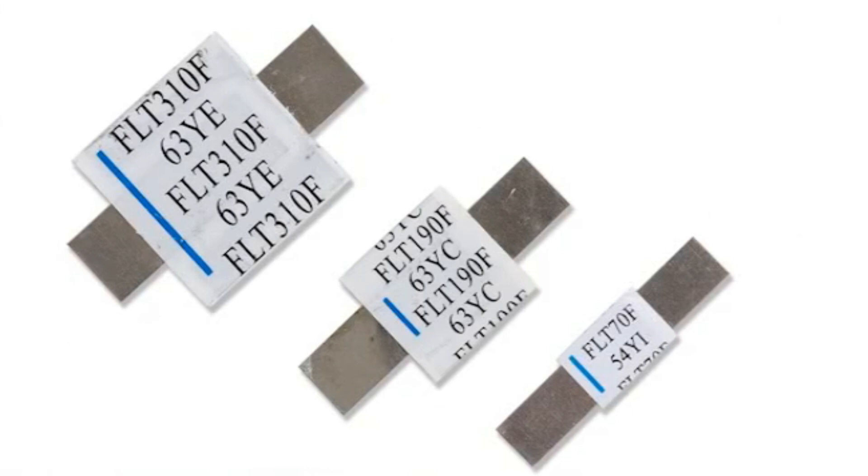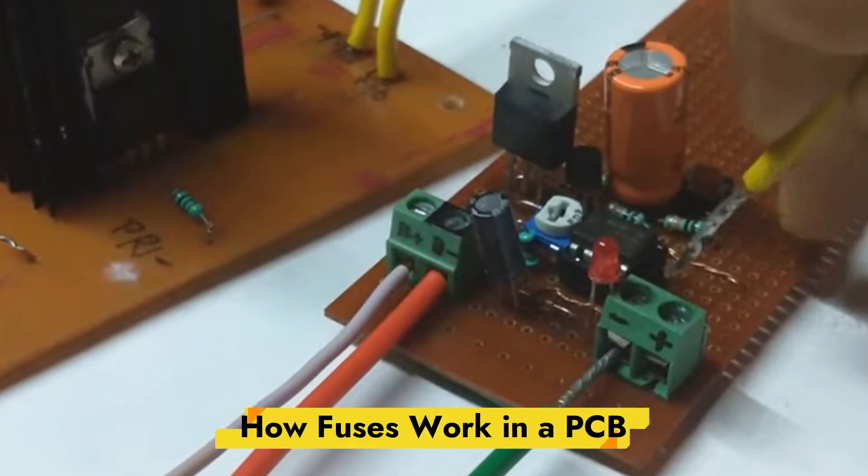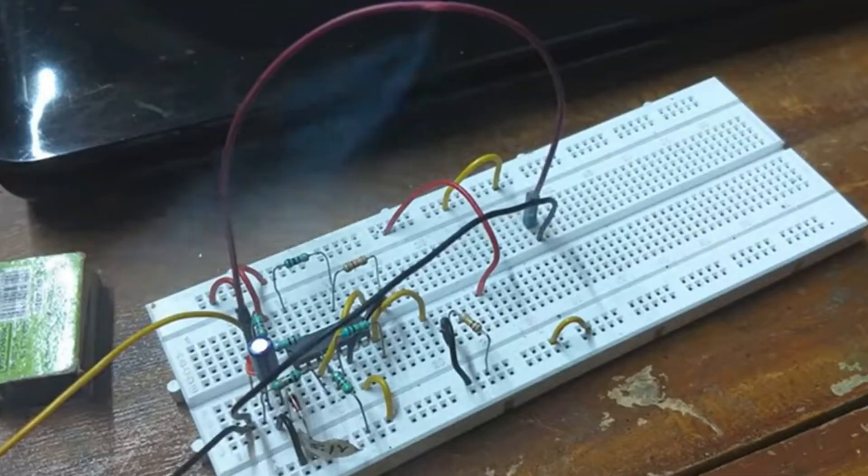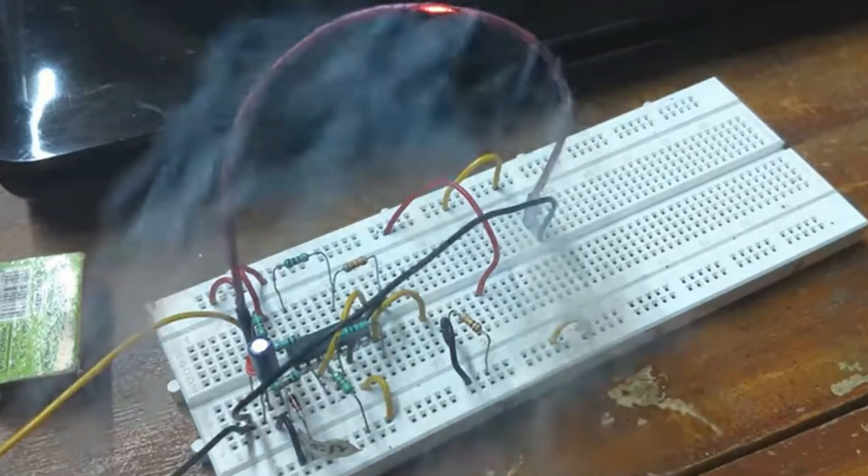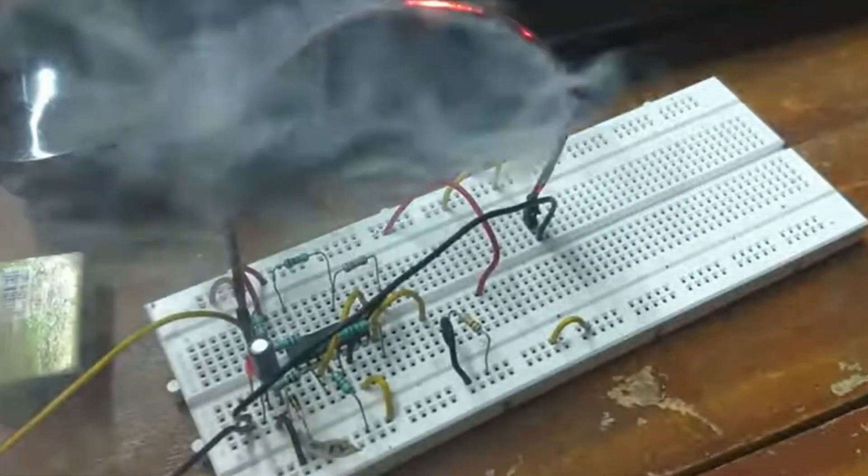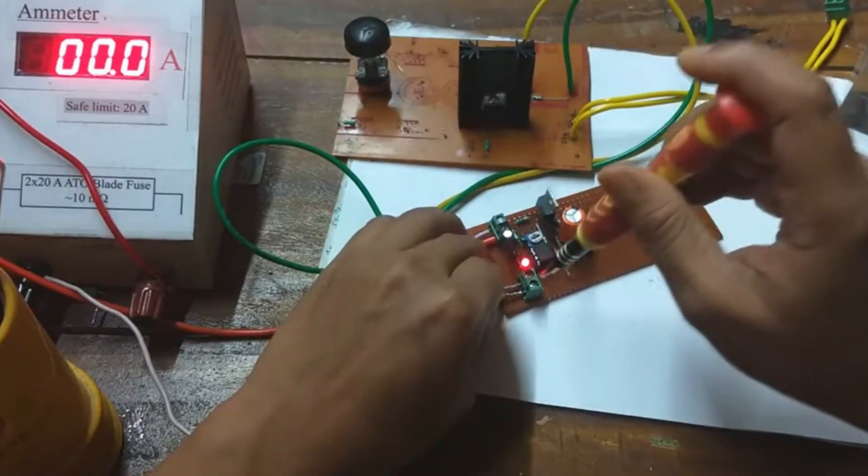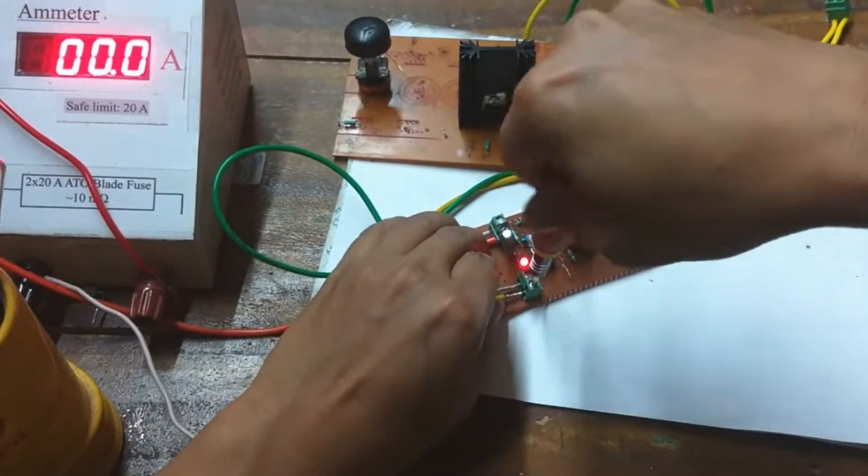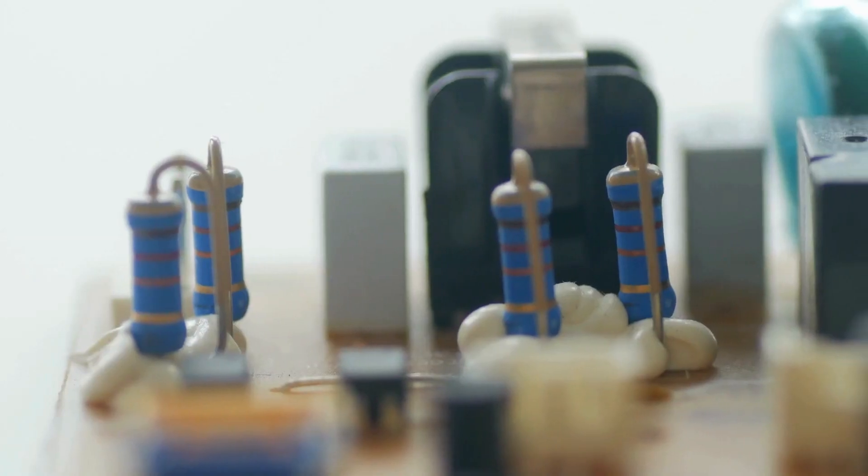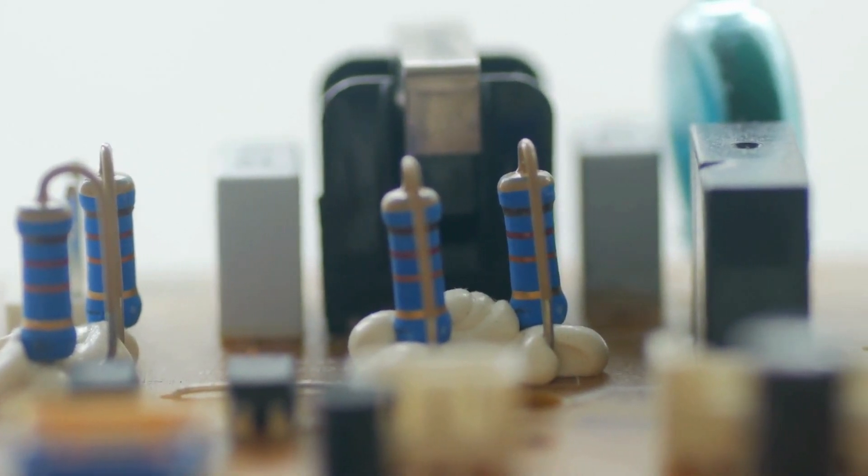How fuses work in a PCB. The primary function of a fuse in a PCB is to protect the circuit from overcurrent conditions. When designing a PCB, the fuse is typically placed in series with the power supply line so that all current flowing to the circuit must pass through the fuse.